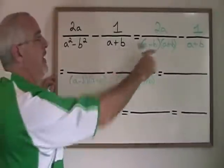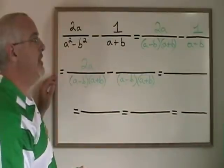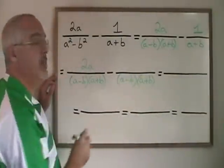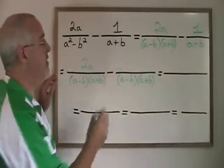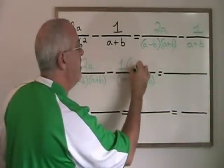The first fraction will therefore stay the same. The second fraction has been expanded. Since the bottom was multiplied by the binomial a minus b, the top is also going to be multiplied by a minus b.